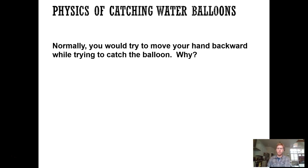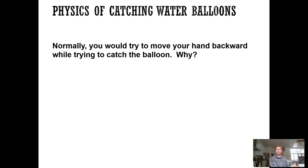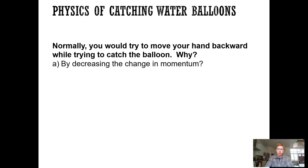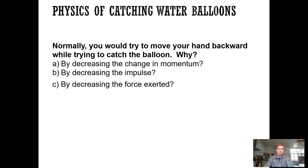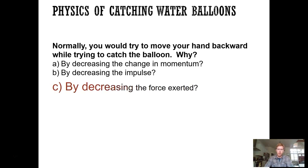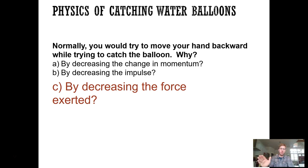Think about an egg toss or water balloon toss — when catching, you move your hands back rapidly with the balloon. What are you doing? Are you decreasing the change of momentum, decreasing the impulse, or decreasing the force? The answer is C: decreasing the force. The change of momentum is fixed — from its initial velocity to zero. Since change of momentum equals impulse, A and B are really the same thing. The only thing you can do is increase the contact time and thereby decrease the force on the balloon.